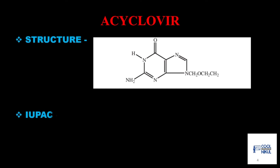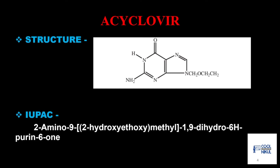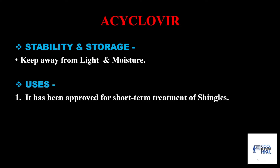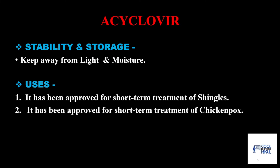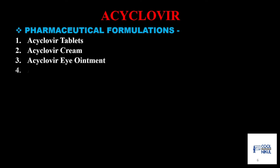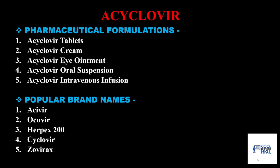Acyclovir: this is the structure and the IUPAC name. Stability and storage: keep away from light and moisture. Uses: it has been approved for short-term treatment of shingles, chickenpox, and herpes simplex keratitis. Formulations are available mainly in tablet form, cream, eye ointment, oral suspension, and intravenous infusions. Popular brand names are Acivir, Ocuvir, Herpex 200, Cyclovir, and Zovirax.